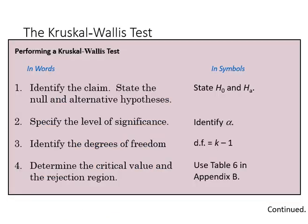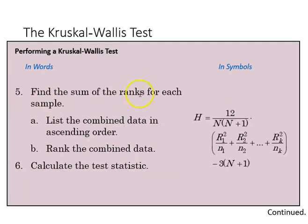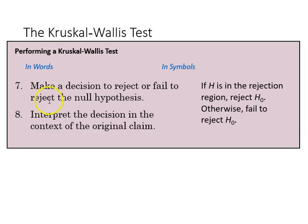These are the steps for the Kruskal-Wallace test. First, state your null and alternative hypotheses. Then specify your alpha level and find degrees of freedom as k minus one, where k is the number of samples. Determine the critical value using the chi-square table, then find the sum of ranks for each sample by listing the combined data in ascending order, ranking the combined data, and calculating the test statistic using the equation previously reviewed. Finally, make a decision to reject or fail to reject the null, and interpret that decision in the context of the original claim.